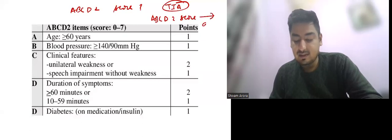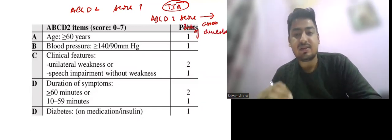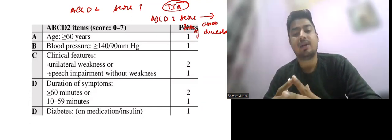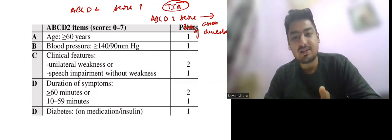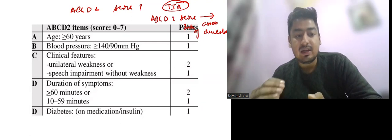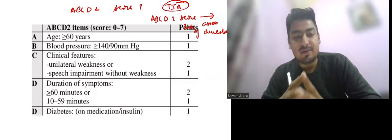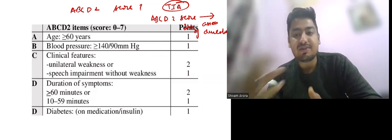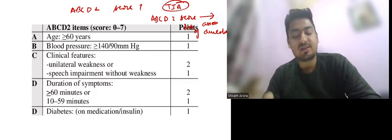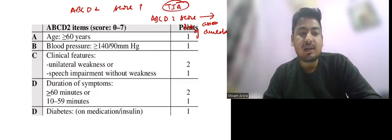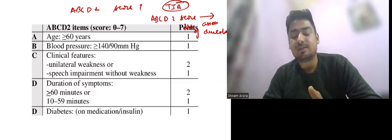To assess the risk of developing stroke in these patients. This is to assess the short-term risk. The patient has improved within 24 hours in TIA, but now the patient will ask what is the risk. I have to calculate this ABCD2 score, and based on this score, we decide whether to start single antiplatelet or dual antiplatelet.